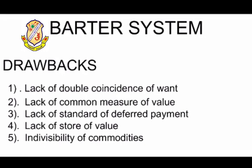The last drawback of barter system is indivisibility of commodities. For example, a person who has a cow wants to exchange it for another good, but the other good is quite small in amount — he cannot just divide the cow to get the value of that good. There are many products which cannot be divided. With money, you can have the smallest currency to the biggest currency, but divisibility is not possible especially with animals or many other products, because if you divide the product it loses its value. That is the fifth drawback of barter system.